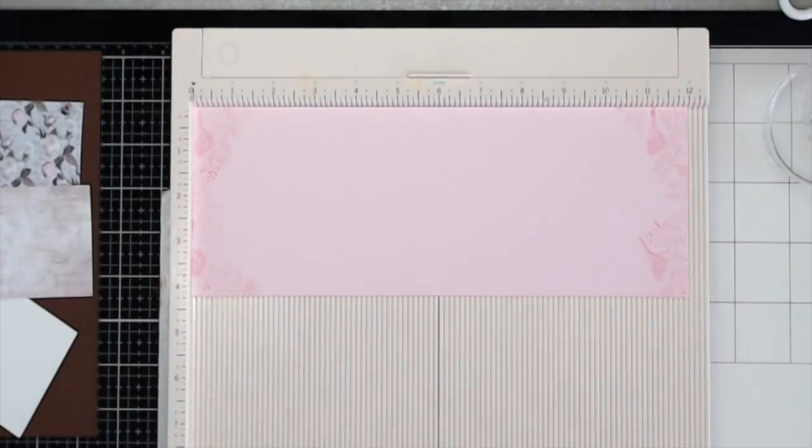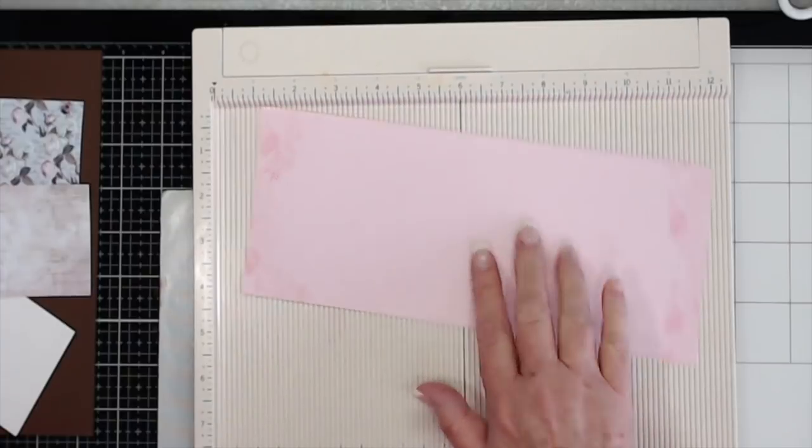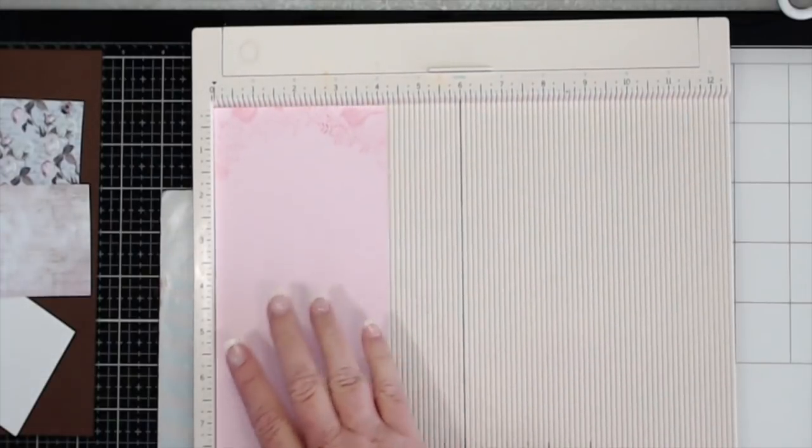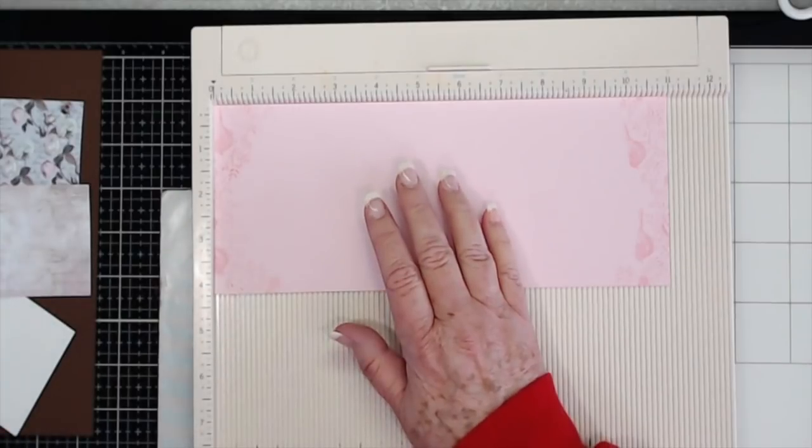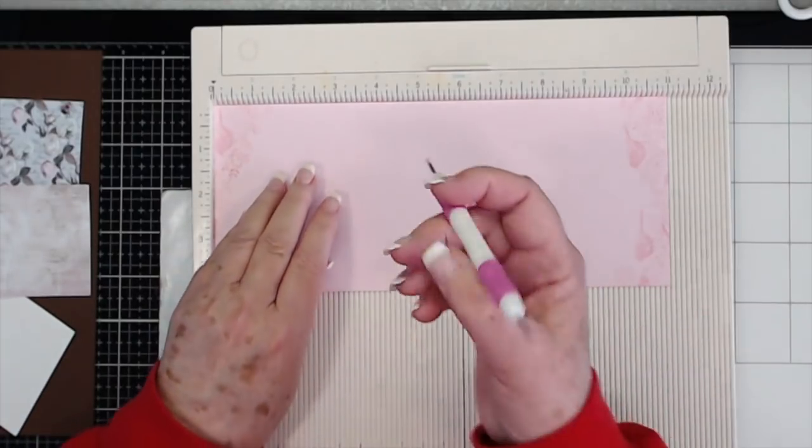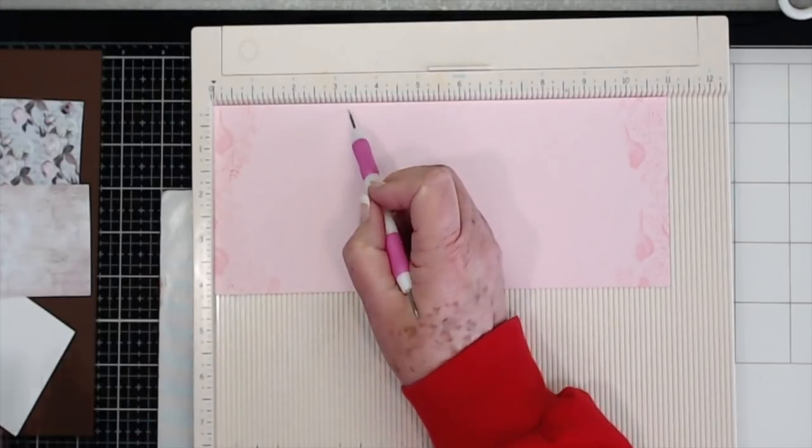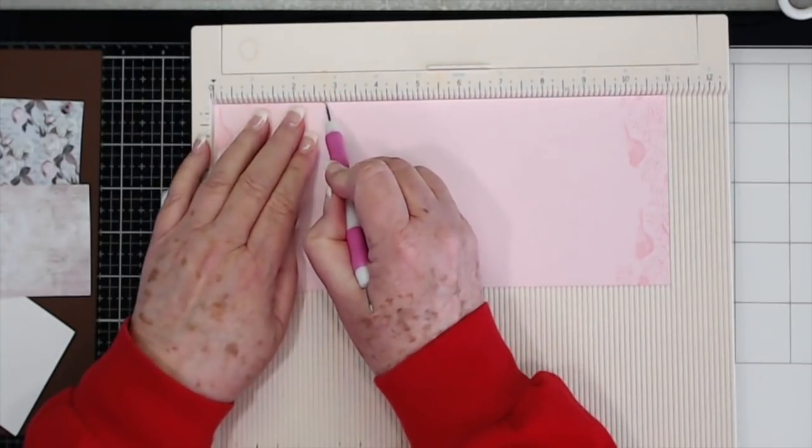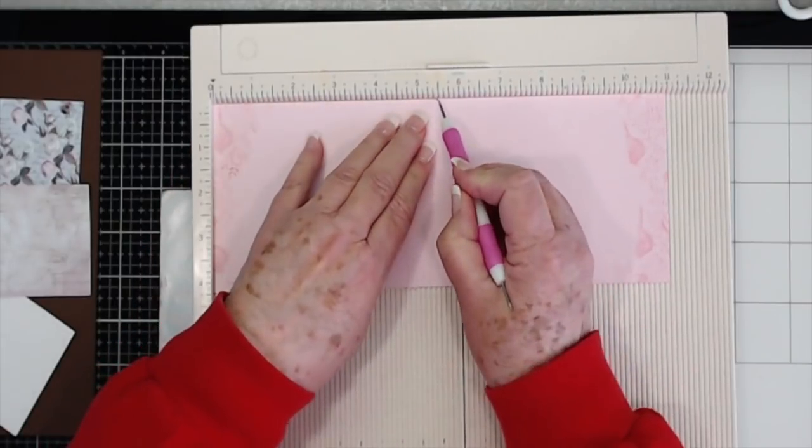Just use a color of ink that is close to what your paper is and you've got it made. Okay, so this piece is cut at 4¼ by 11 and we're going to score at 2¾—let me look at my measurements—2¾ and at 5½.